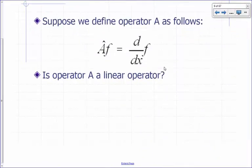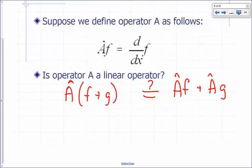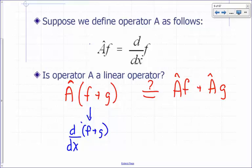Let's say we define operator A as before: A operating on a function F gives you back the derivative of F. Is A a linear operator? Let's check condition 1. A hat operating on F plus G — is that equal to A hat operating on F plus A hat operating on G? What's A hat on F plus G? That's the derivative of F plus G with respect to X. A hat operating on anything gives you the derivative of whatever it operates on.